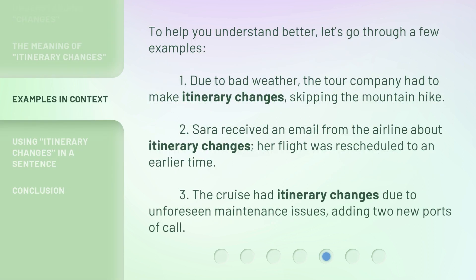To help you understand better, let's go through a few examples. One: due to bad weather, the tour company had to make itinerary changes, skipping the mountain hike. Two: Sarah received an email from the airline about itinerary changes — her flight was rescheduled to an earlier time. Three: the cruise had itinerary changes due to unforeseen maintenance issues, adding two new ports of call.